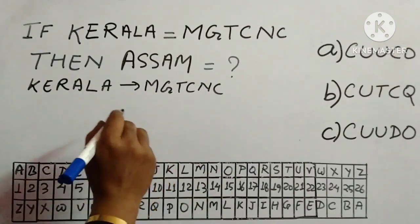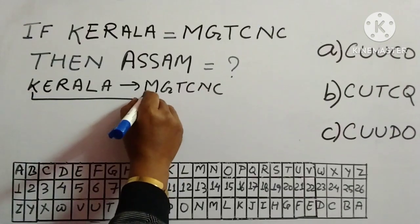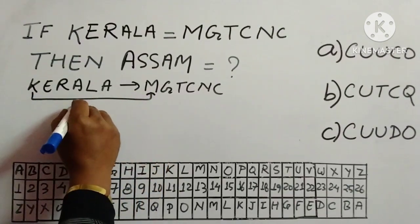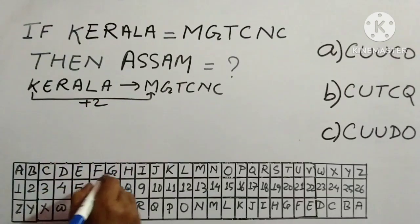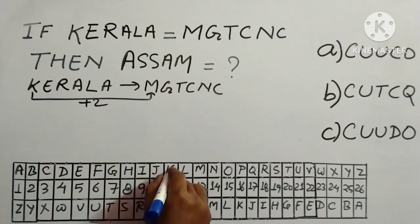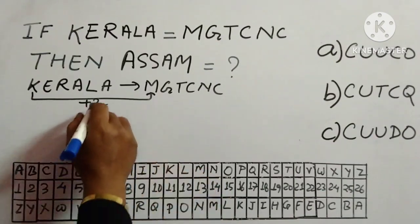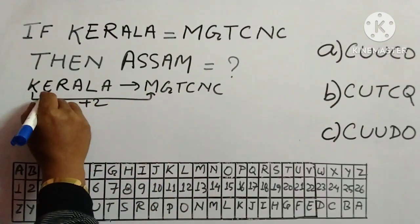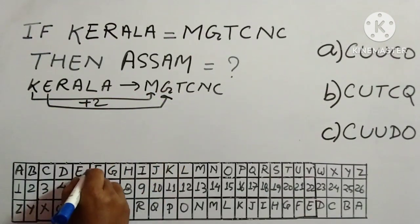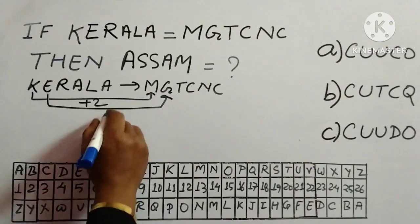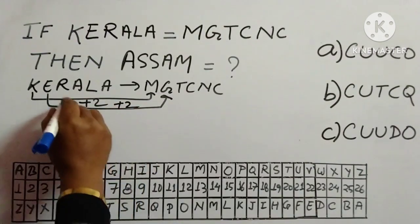Now start finding out the relation. So here K, now if you will add plus 2, that means K is over here, after K then L and M. So M is there. After E, so where is E, then F and G. So we are shifting two alphabets.